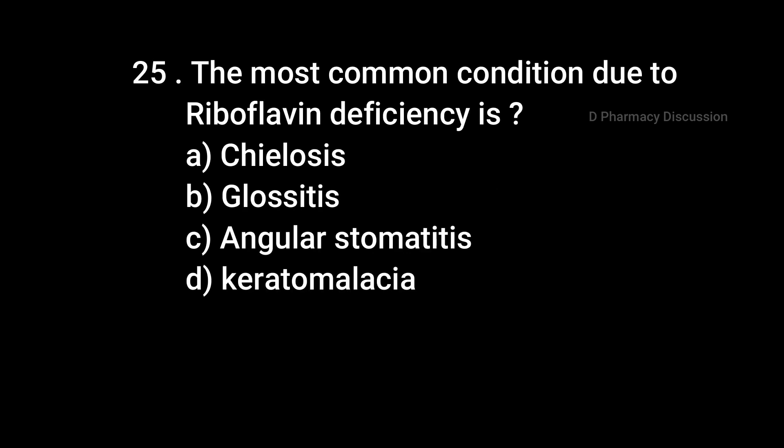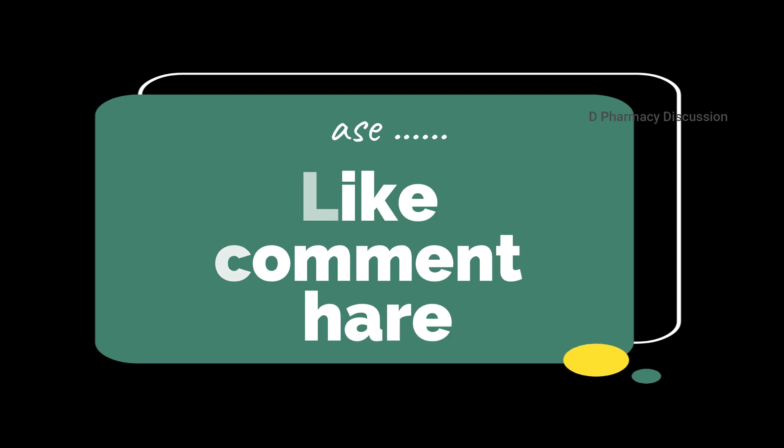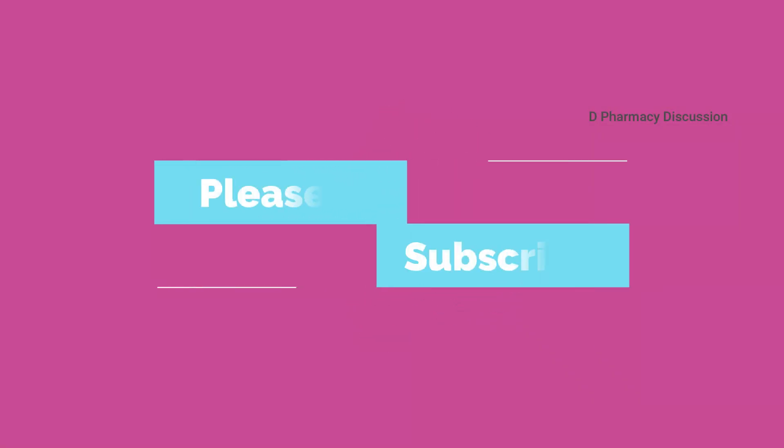Question 25: The most common condition due to riboflavin deficiency is — Option A: Cheilosis, B: Glossitis, C: Angular stomatitis, D: Keratomalacia. Correct answer is Option B: Glossitis. That's all for today's session. If you like the video, please give a thumbs up, share the video with your friends, and subscribe for more. Thank you so much.